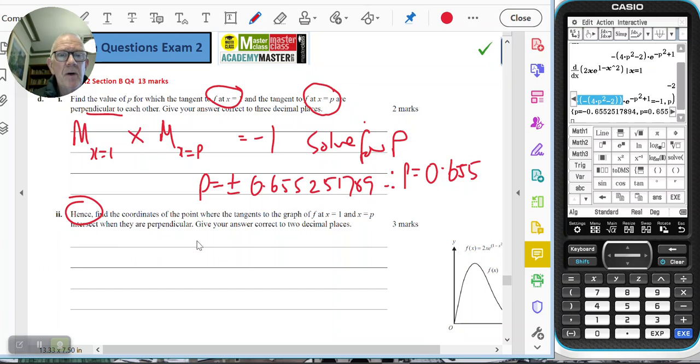Hence, find the coordinates of the intersection point when they are perpendicular. I want where y of the tangent when x equals 1 equals y of the tangent when x equals p, given p equals 0.655.